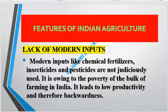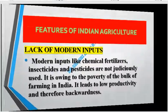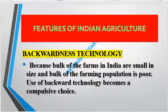Another feature is the lack of a modern approach. High-yielding variety seeds, chemical fertilizers, insecticides, and pesticides are not used properly. The farming community is largely uneducated. This results in a vicious cycle: small holdings lead to low productivity, low productivity leads to low income, low income means farmers cannot invest in modern equipment, and backward techniques keep productivity low.